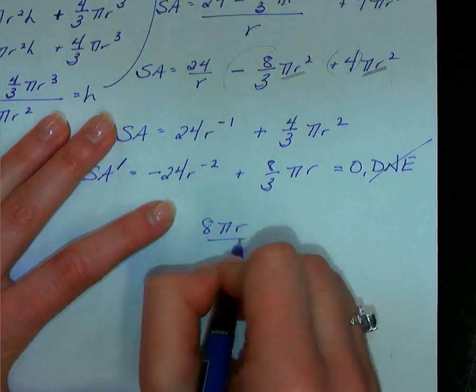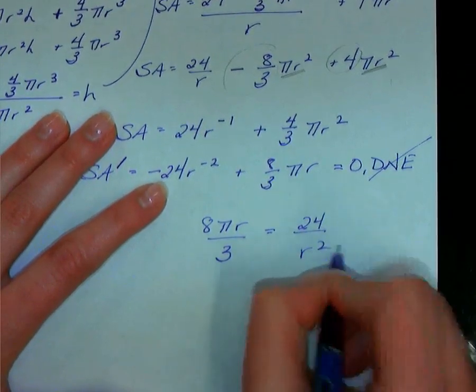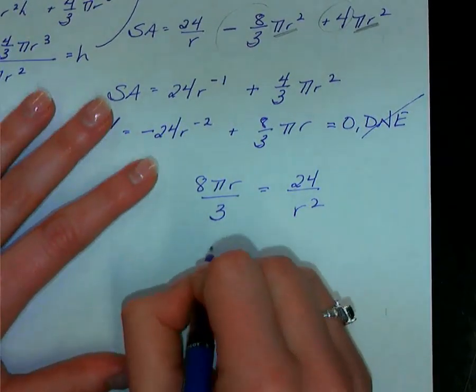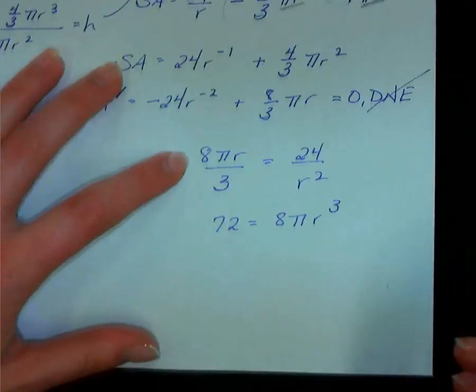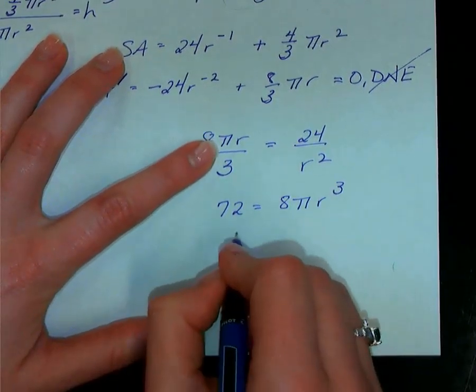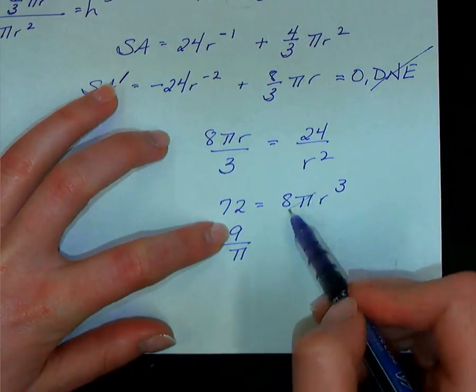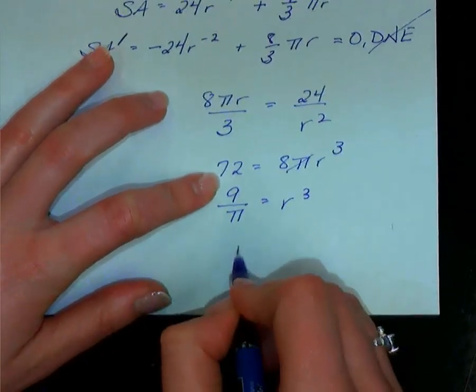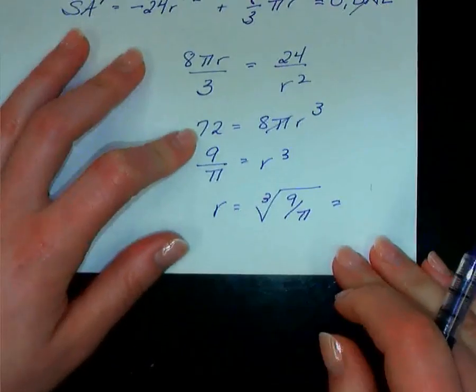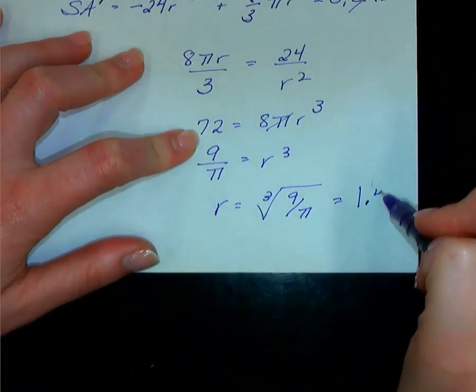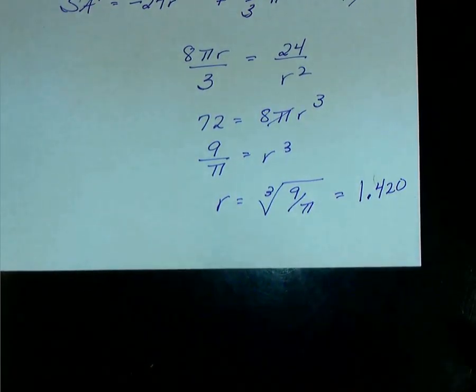So now if I have this equation set equal to 0, what I can do is I can add this over, so I've got (8πr/3) equal to 24/r². Okay, now I can cross multiply and solve. 72 is equal to 8πr³. Divide by 8π and you get 9/π, okay, because 72 divided by 8 is 9 and then we're divided by π, equal to r³. Therefore r is equal to the cubed root of 9 divided by π. Throw that on your calculator if you remember those, 1.420.